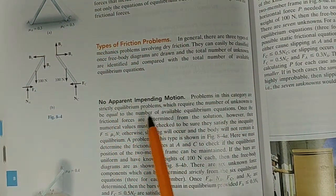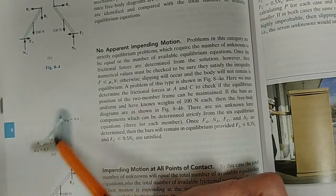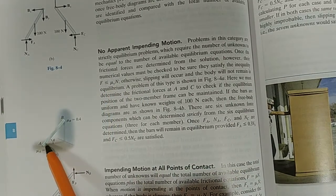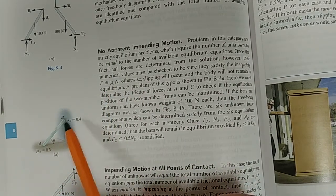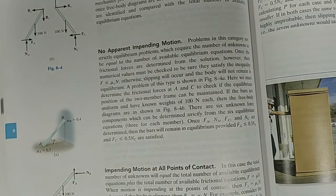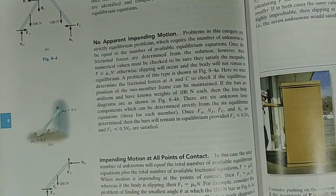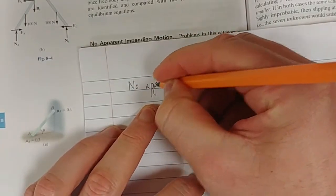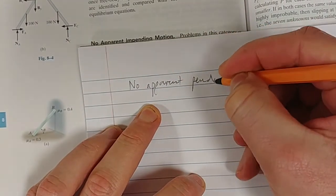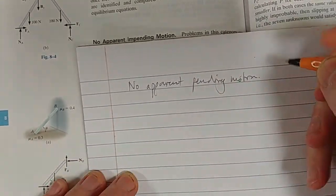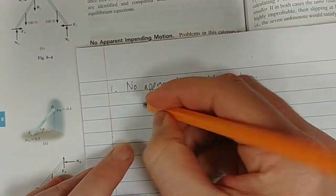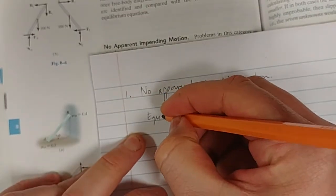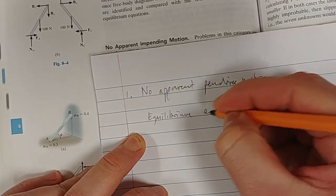The first type is no apparent impending motion. If you know that your body or object has no apparent impending motion, then we can only use our equilibrium equations.